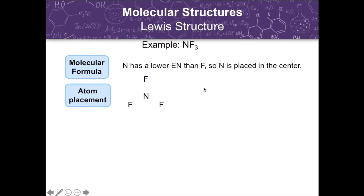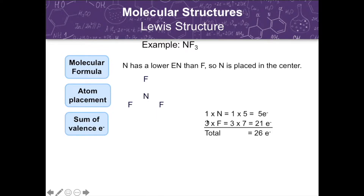So our atom placement will now look like this. Then, we have to determine the total number of valence electrons. Looking at our molecular formula, it has one atom of nitrogen, multiplied by its valence electron of 5, giving a total of 5 electrons. For fluorine, we have 3 atoms multiplied by its valence electron of 7, giving 21 electrons. Adding nitrogen and fluorine together, we arrive at a total of 26 valence electrons.